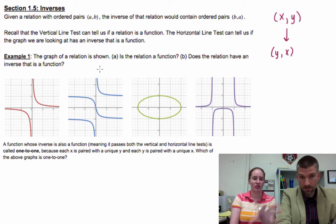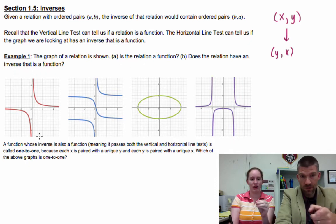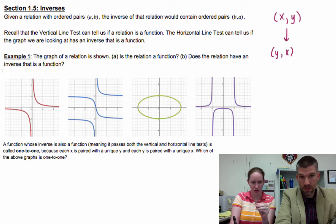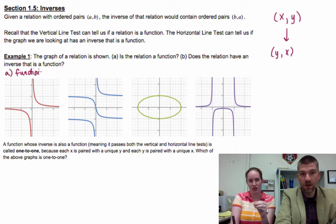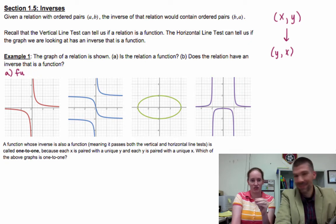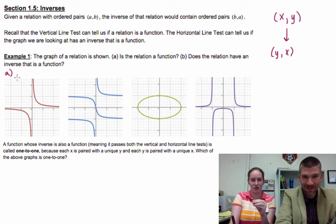So for example 1, the graph of some kind of relationship is shown. Part A says, is the relation a function? So that's the vertical line test. Yes. So on this example, vertical line test, function. Yes. Pick an ink. So A, yes, it's a function. Or actually, I guess I should have said yes. Is the relation a function? Yes. You bet your mama.